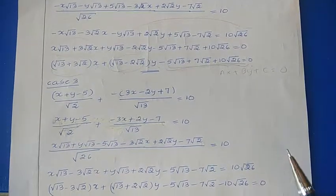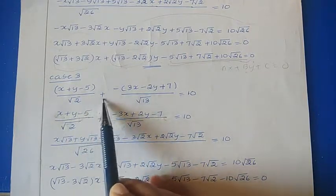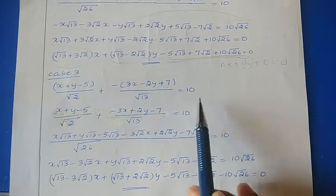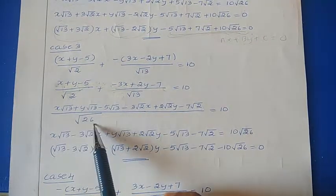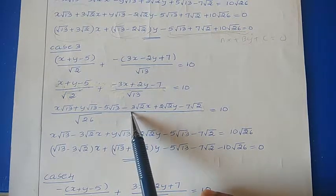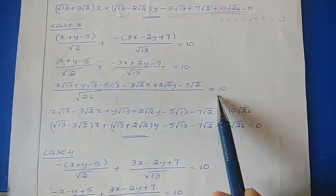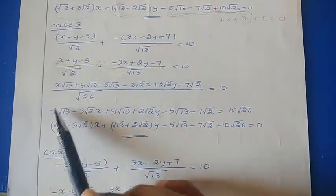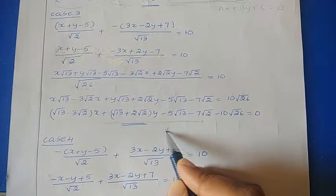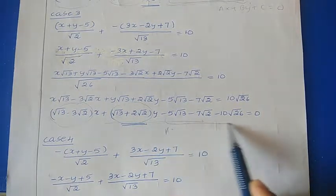Case 3: taking the first value as positive and the second as negative — (x+y-5)/√2 - (3x-2y+7)/√13 = 10. Taking LCM √26 and multiplying: (√13·x + √13·y - 5√13 - 3√2·x + 2√2·y - 7√2) / √26 = 10. After multiplying through and grouping x and y terms, the result is again in the form AX+BY+C=0.